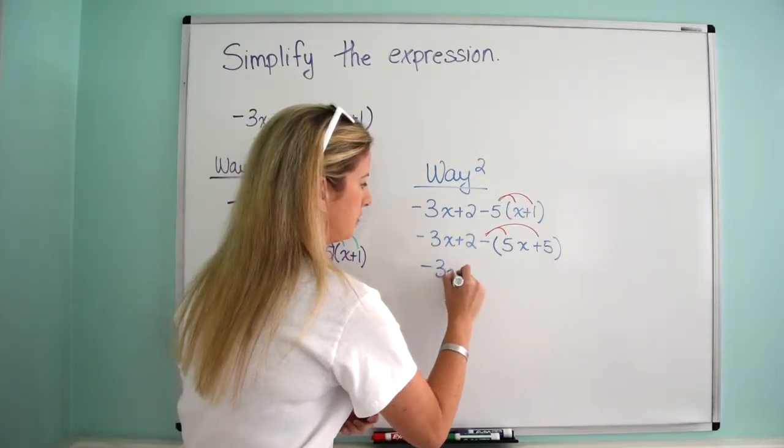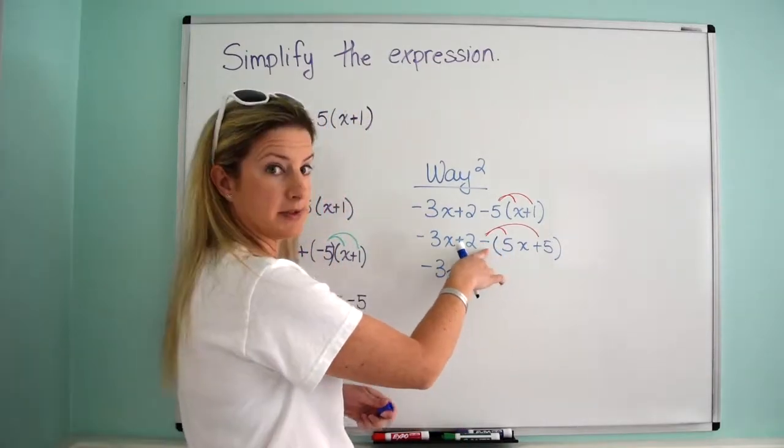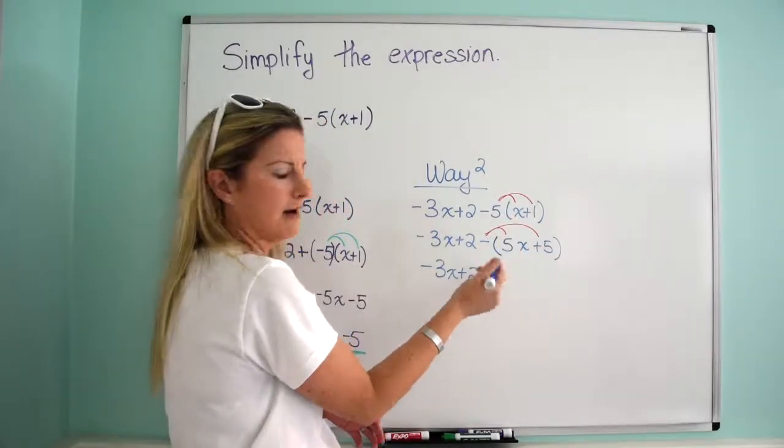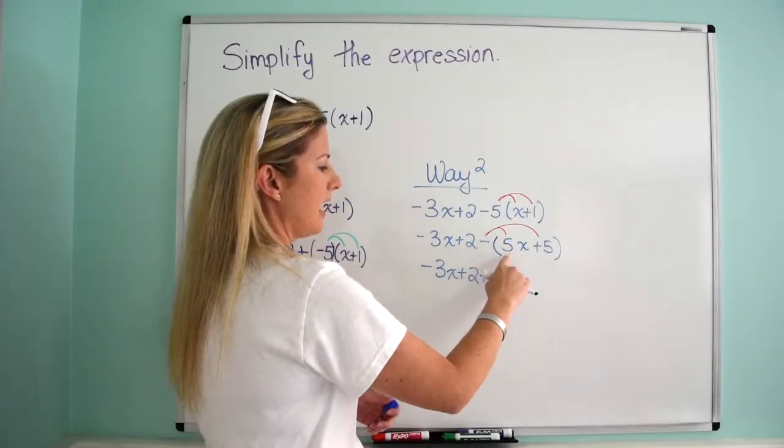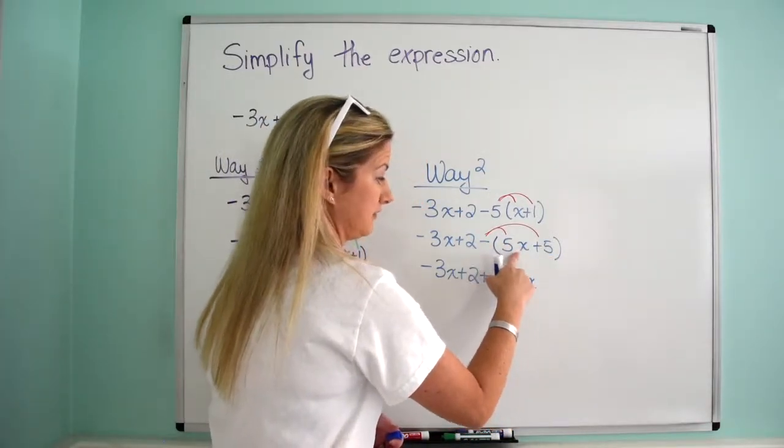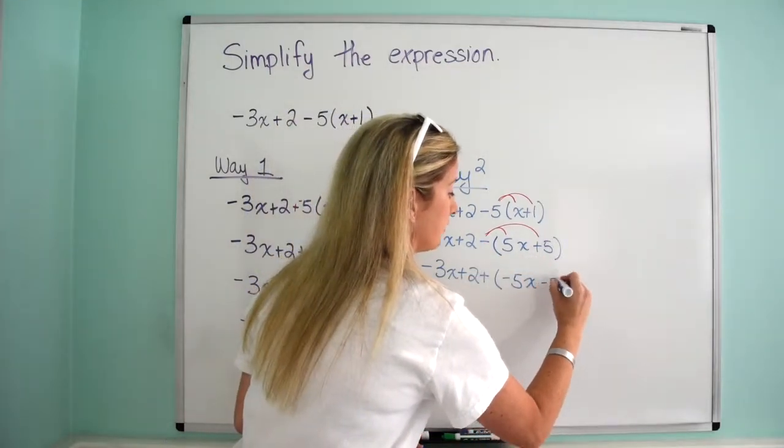So this becomes negative 3x plus 2 plus, because when we distribute the negative in, this becomes plus, because we put the negative in. Because we could think about it as there's a plus minus there. And then we have the quantity negative 5x. That's because negative times 5x is negative 5x. Negative times positive 5 is negative 5.